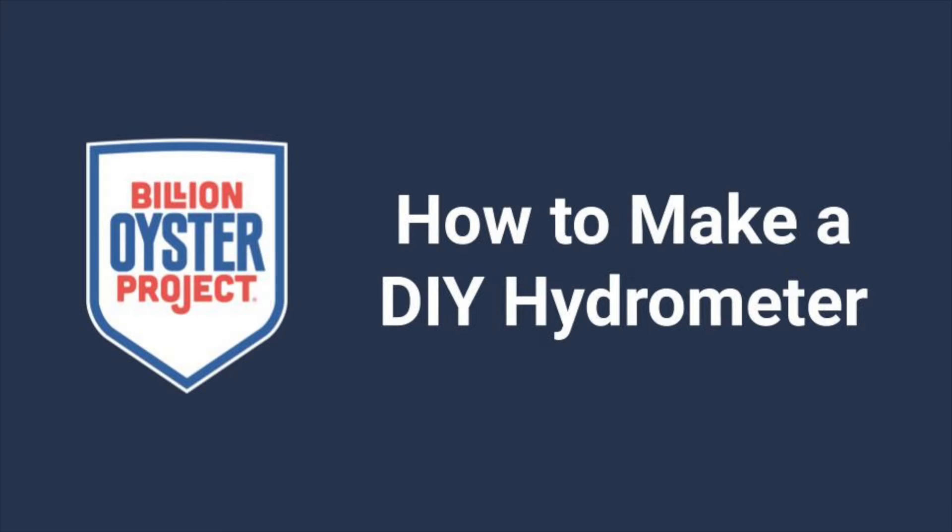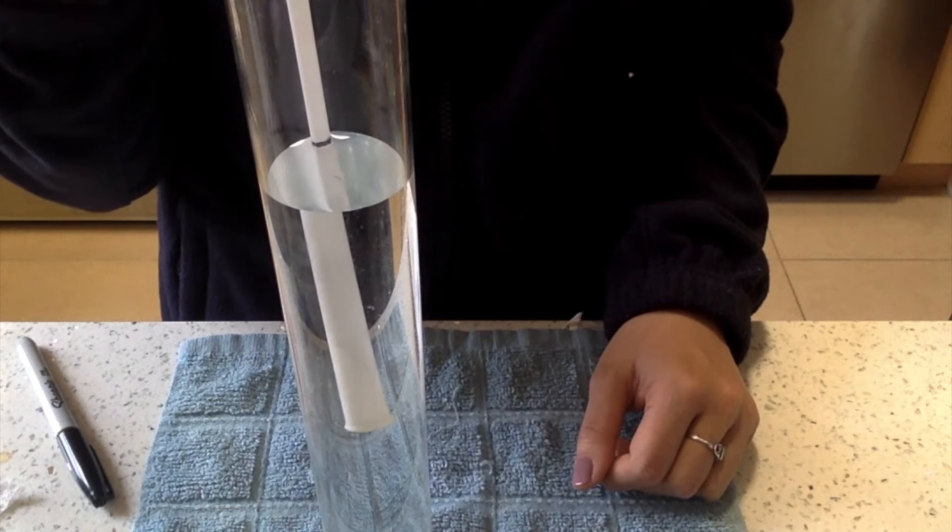How to make a do-it-yourself hydrometer. A hydrometer measures the density of a liquid. Lighter liquids will make the hydrometer sink, and heavier liquids will make the hydrometer rise.